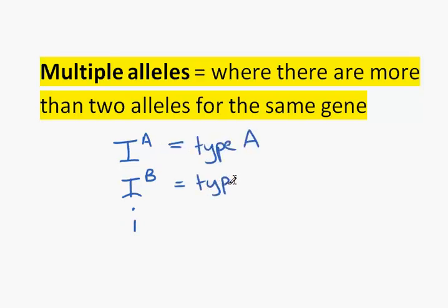Type A, type B, and type O blood. As you can see here, type A and B are uppercase because they're dominant, whereas type O is recessive.